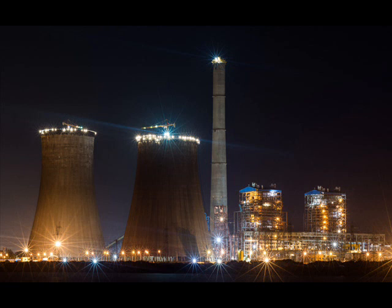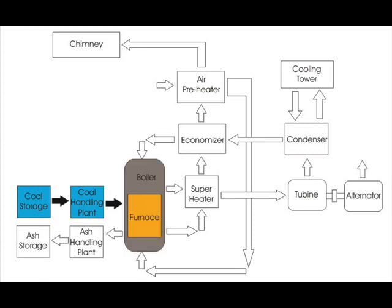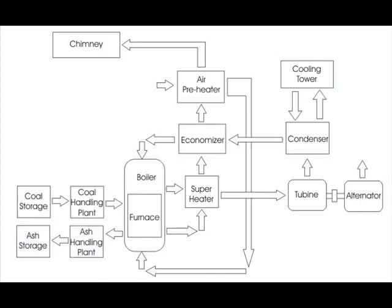This power station mainly involves seven major arrangements: 1. Coal Handling Plant, 2. Steam Generating Plant, 3. Steam Turbine, 4. Alternator, 5. Water Feeding Arrangement, 6. Cooling Arrangement, and lastly, the Ash Handling Arrangement. Let us discuss these points in brief one by one.